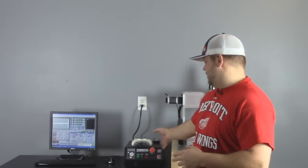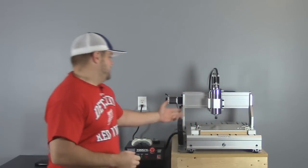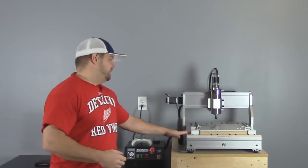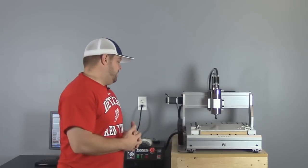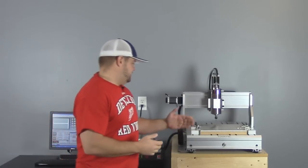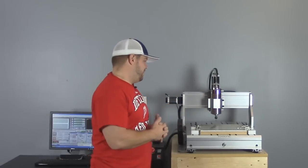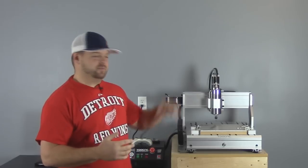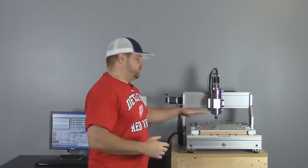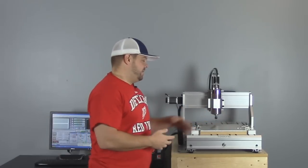You can see over here I've got the control box and the computer running. Behind me you have my actual CNC machine. This is called a 6040 CNC. It's got roughly a 600 millimeter long bed by a 400 millimeter wide bed and it's got about two and a half to three inches of z-axis travel.